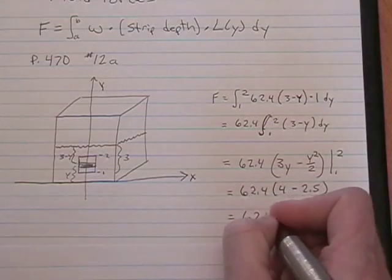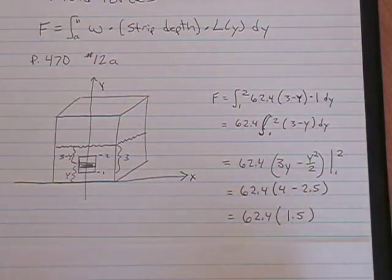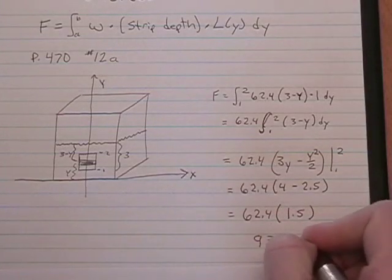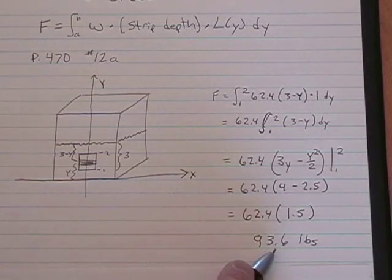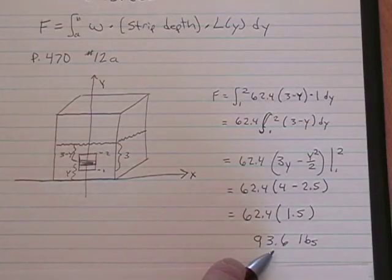62.4 times 1.5 happens to be 93.6 pounds. This is the force applied to one side of this vertical thin plate, this little window in our tank.